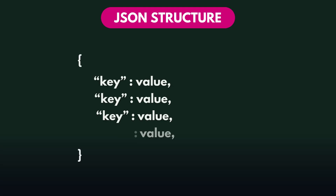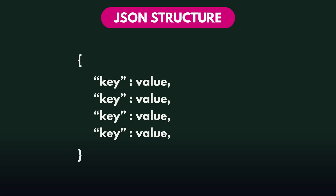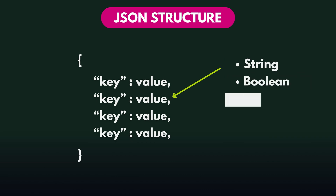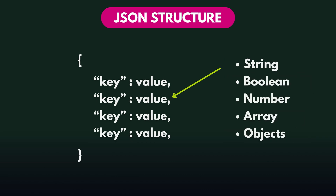JSON is made up of key-value pairs. The keys are written in double quotes and the values can be strings, booleans, arrays, numbers, and even other objects. When JSON is sent or received it is in a string format, so this would be a JSON string.